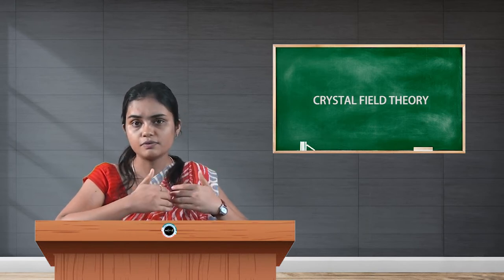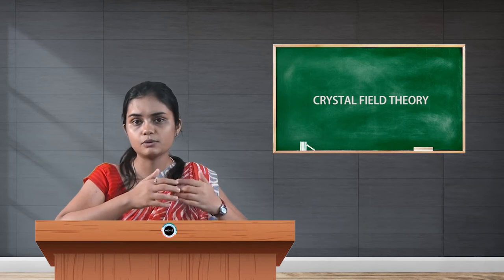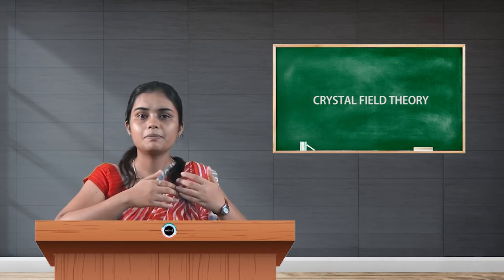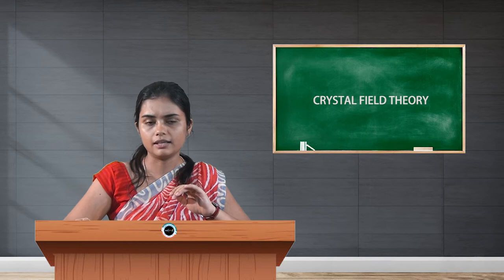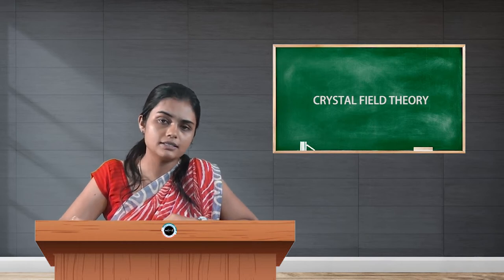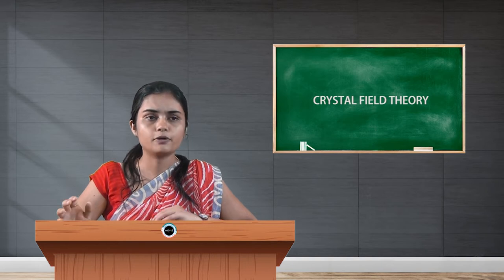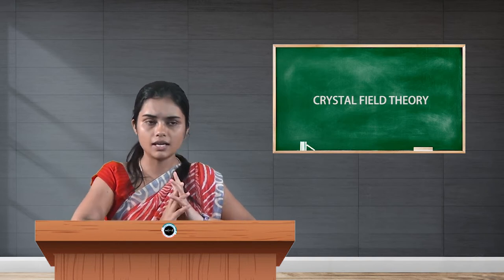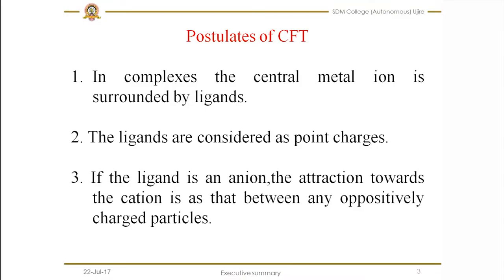The factors which VBT really failed to explain will be explained by this particular theory. Now we shall discuss the postulates of CFT. The first postulate says that in complexes, the central metal ion is surrounded by ligands. The second postulate is that ligands are considered as point charges.